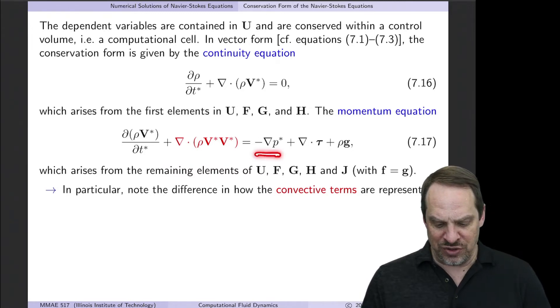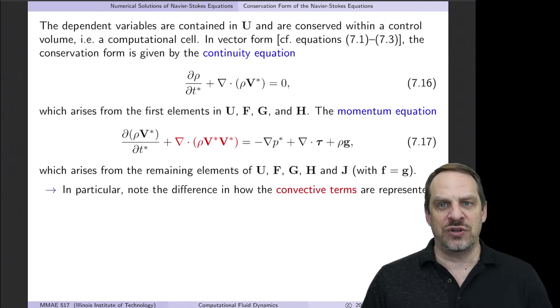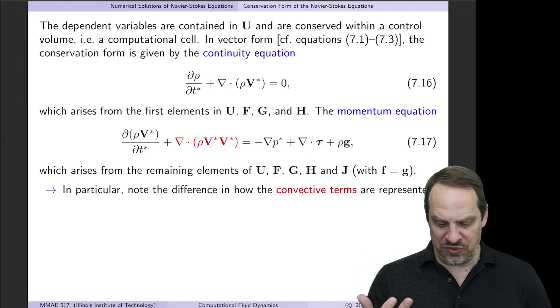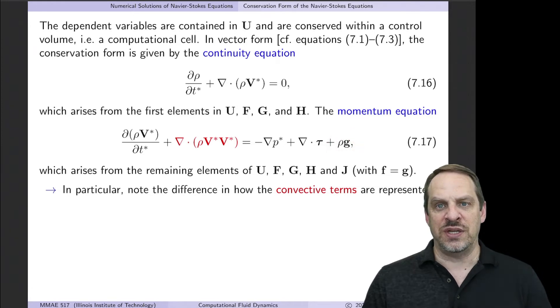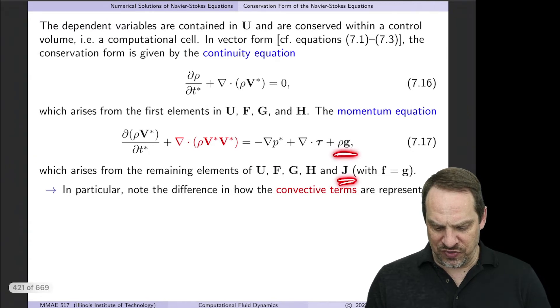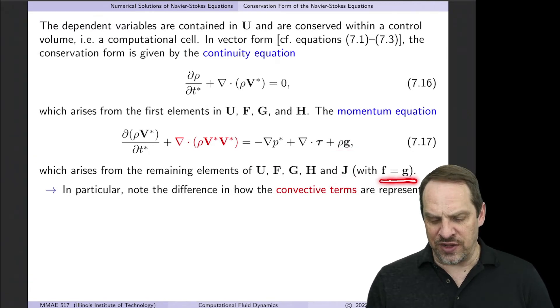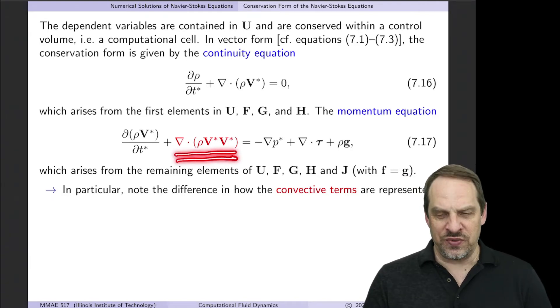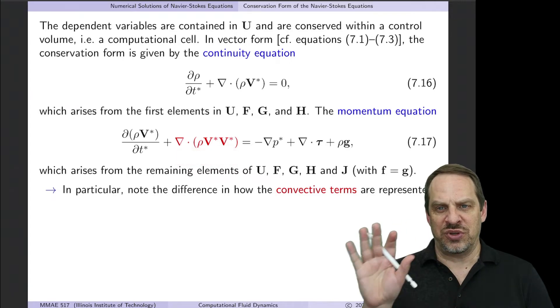We have the pressure gradient term. We have the viscous term. Again, in terms of now the stress tensor τ, you would need to include a constitutive law to relate the stresses to the strain rates, such as a Newtonian fluid or whatever type of fluid it happens to be. And then you also have here ρg. That would be the body force due to gravity, the effects of gravity that comes from the J. The main thing I want you to see is how we've represented the convection terms here differently than in the incompressible case.